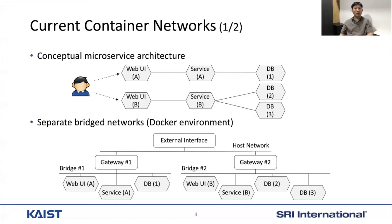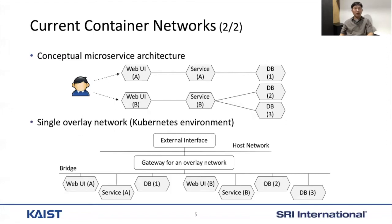In the case of Kubernetes, although containers are vertically grouped according to microservices, all containers are actually connected to a single overhead network, as Kubernetes aims at multi-node environments. From this container networking architecture, some of you may notice that current container networks probably have some security problems due to their architectural design.